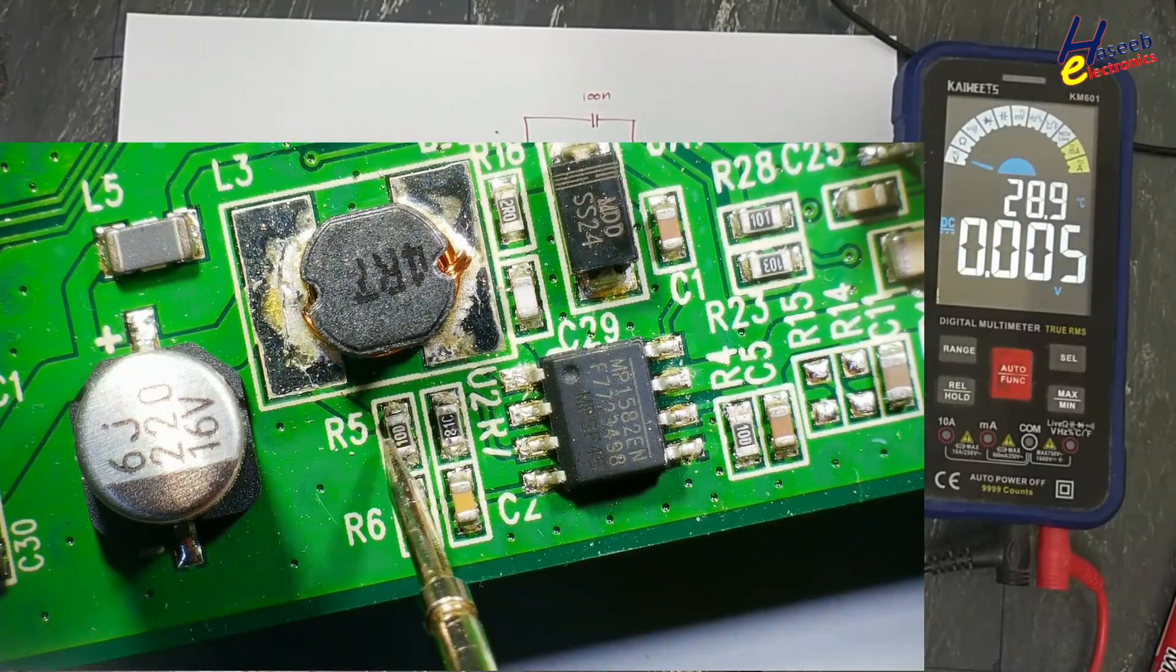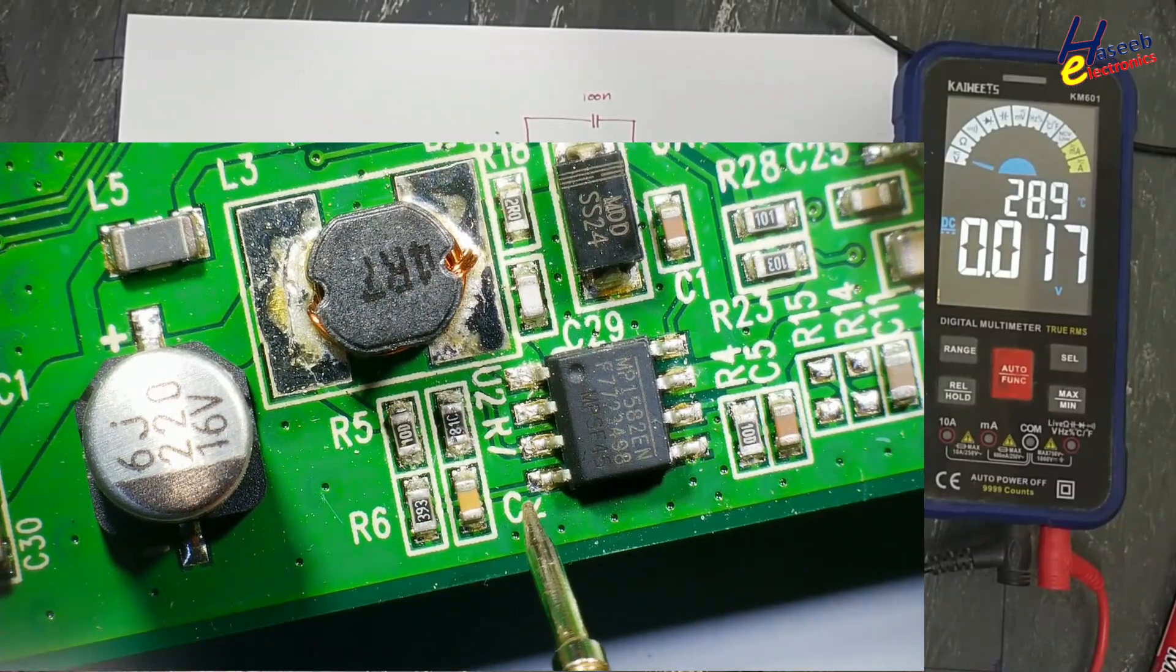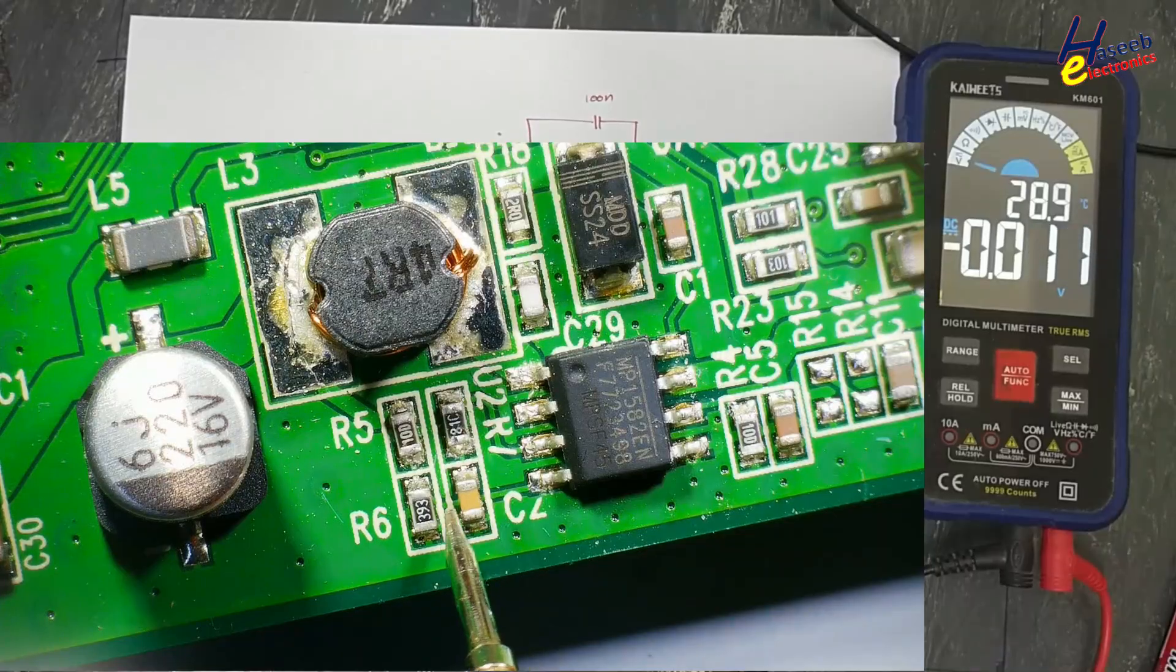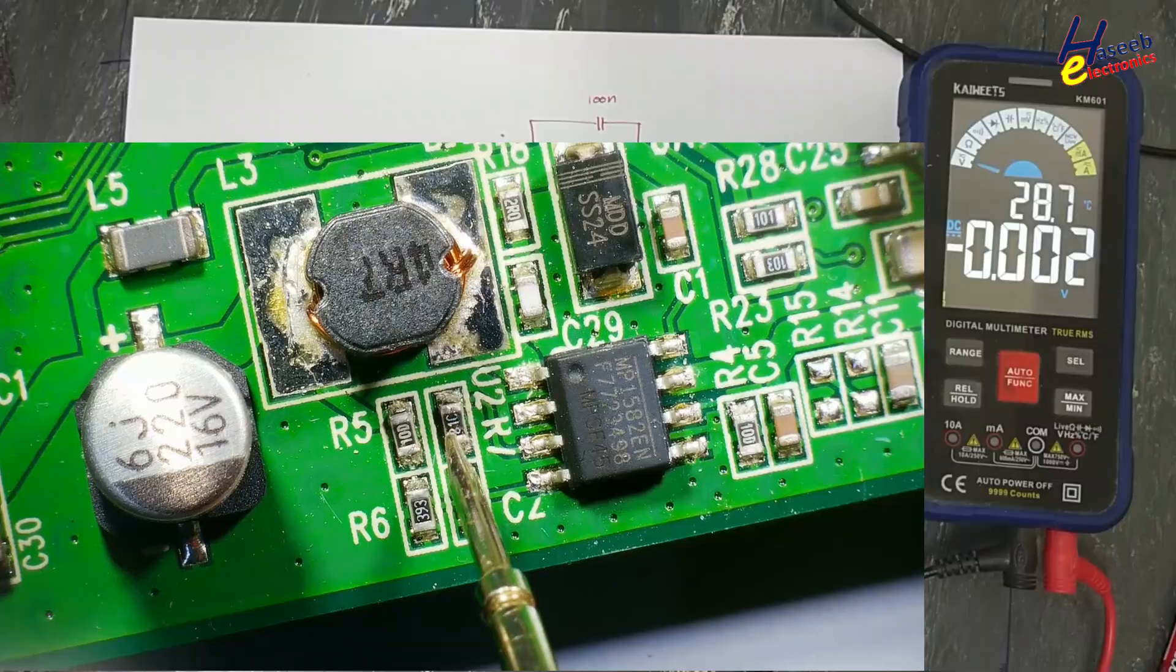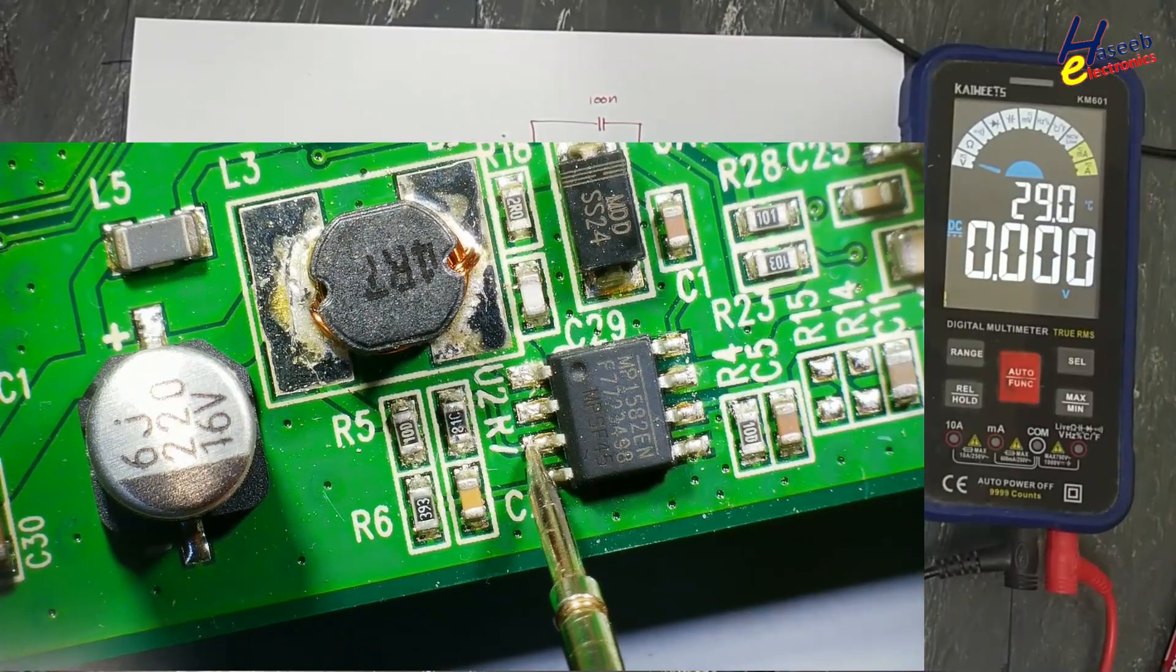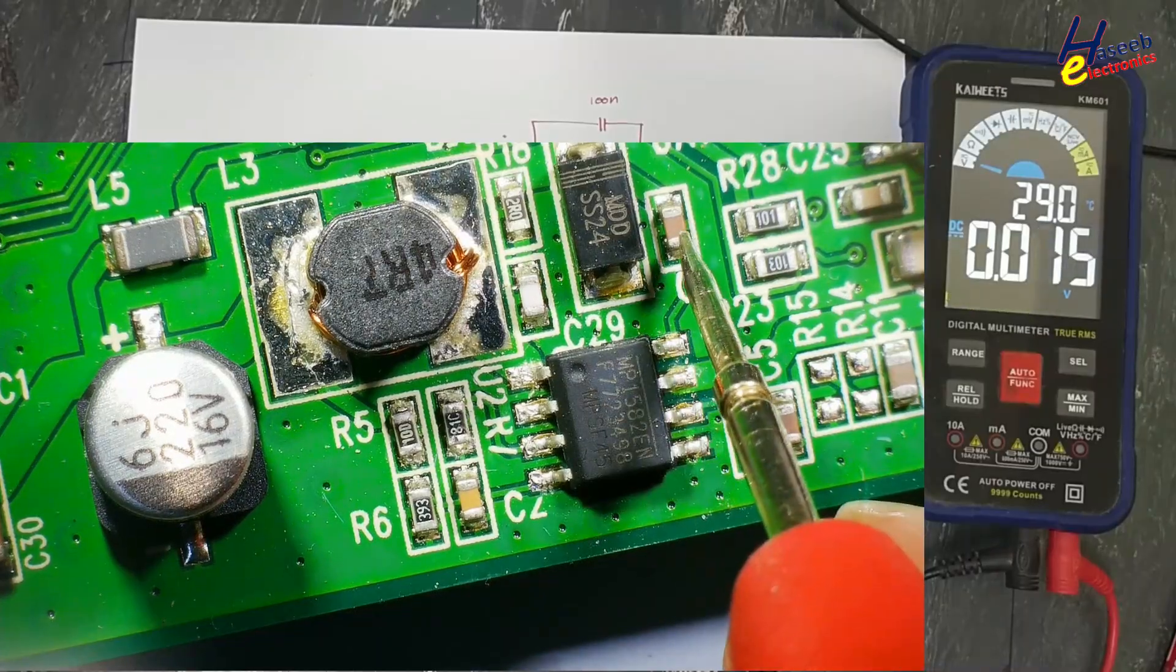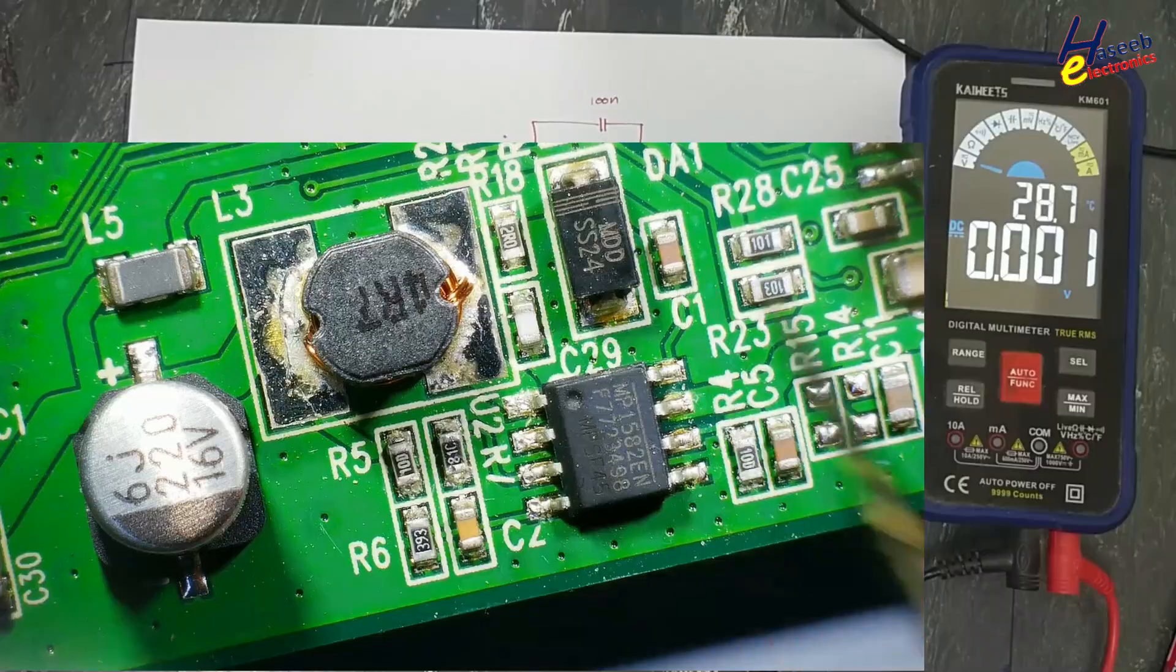And from the output terminal here we have voltage divider network. It is providing feedback. Feedback will reach at pin number four from underside of this capacitor. Here it is feedback network and this resistor and capacitor are compensation pins. Pin number eight is bootstrap, that is connected with this capacitor, 100 nanofarad capacitor.